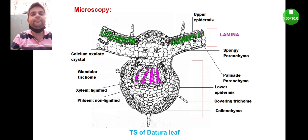And in the midrib part you will find the presence of glandular trichome, vascular bundle which consists of alternative arrangement of lignified xylem and phloem fibers, then covering trichome, collenchyma cells, etc. So this is in brief regarding the morphology and microscopy of datura leaf.